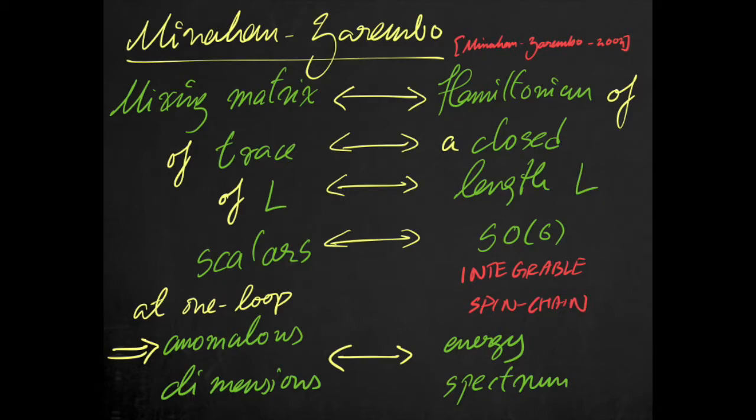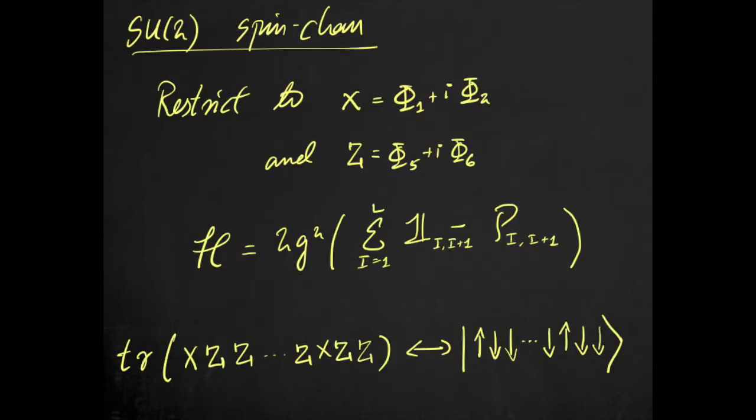For our purposes, let's restrict to the SU(2) sector composed of complex scalars X and Z. The spin chain Hamiltonian is composed of a sum over sites of the chain of an identity operator minus the permutation operator. The permutation operator acts by flipping the spin at neighboring sites. One then identifies a trace composed of X's and Z's with a state composed of spin-ups and spin-downs.